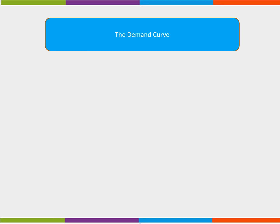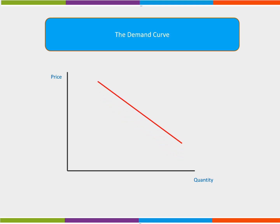We can illustrate this diagrammatically. Firstly, we draw the axes. Then on the vertical axis, we label price. And on the horizontal axis, we label quantity. Then we draw a downward sloping demand curve, which we label D for demand.